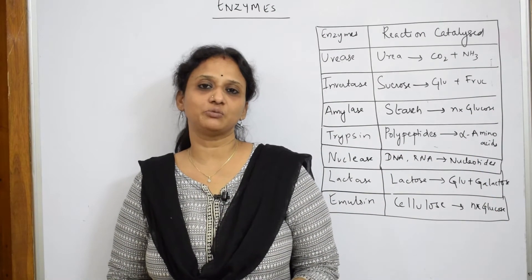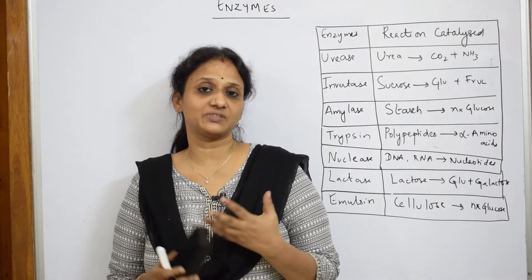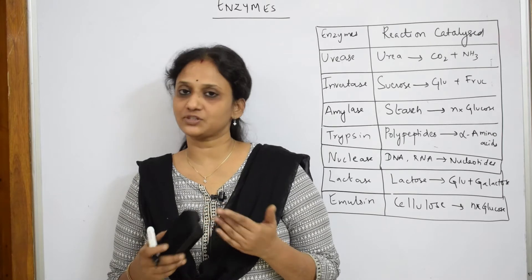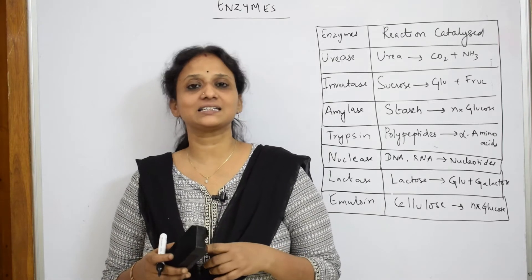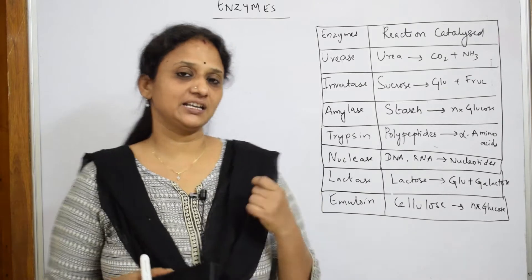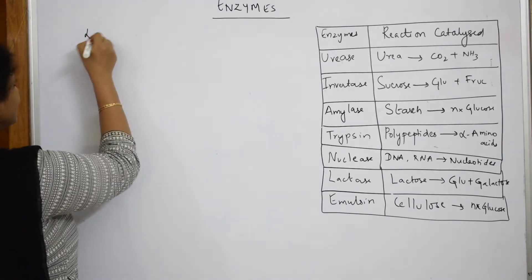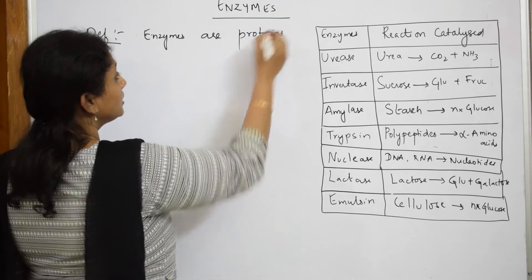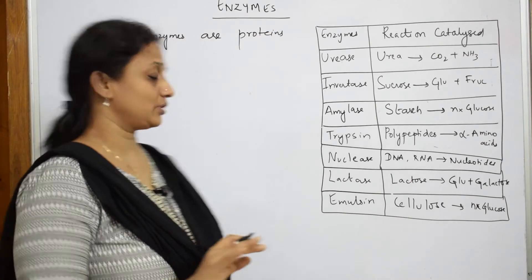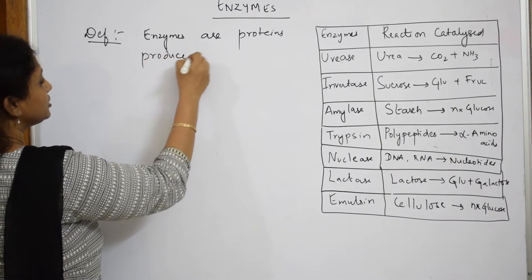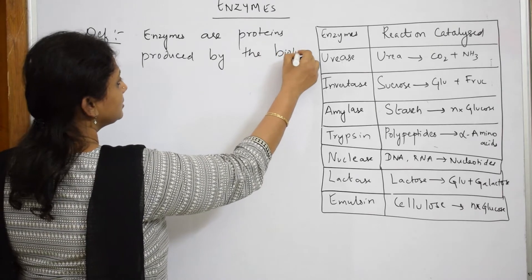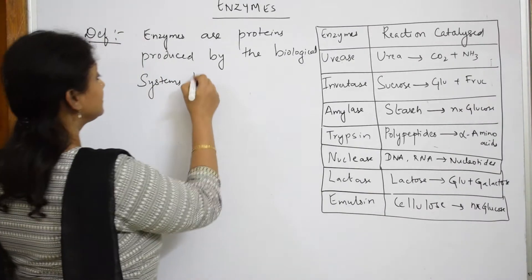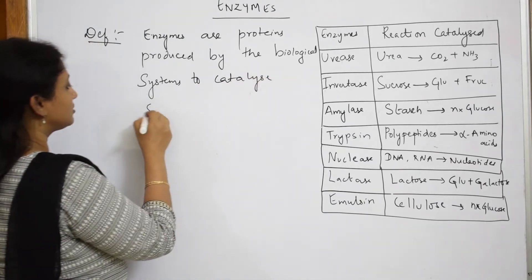Let us come back and learn one more class of biomolecules — enzymes. We have studied carbohydrates, then amino acids, then proteins. Now let us learn enzymes. How should I define an enzyme? Basically, enzymes are proteins. They are produced by biological systems to catalyze specific reactions.